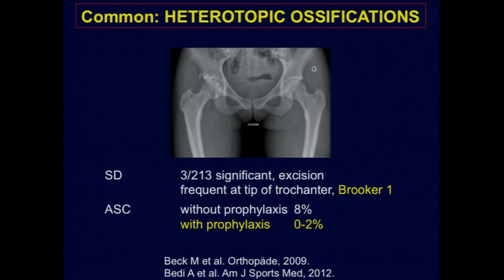Heterotopic ossifications happen in surgical dislocation — three significant cases were described. But frequently you see such things at the tip of the trochanter which don't disturb the patient. In hip scope, these complications were also described. Without prophylaxis, it's much more frequent than with prophylaxis. So I always give prophylaxis to my patients, contrary to what Professor Siebenrock said before.